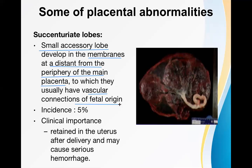The incidence of placenta succenturiata is around 5 percent. Its clinical importance is that the accessory lobe may get retained inside the uterus after delivery of the baby or main placenta, because it is not in contact with the main placenta — it is a little further away and can easily be left inside the uterine cavity. A retained piece of placenta leads to serious hemorrhage because the uterus cannot contract properly, causing postpartum hemorrhage.